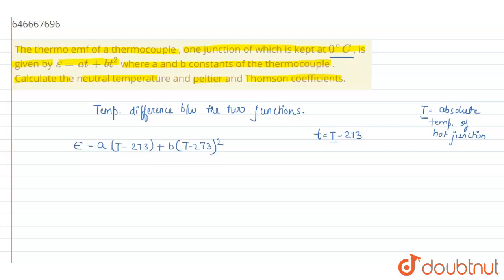Now we will differentiate thermo emf with respect to absolute temperature. So now after the differentiation, that will be de upon dt is equal to a plus 2b into t minus 273.